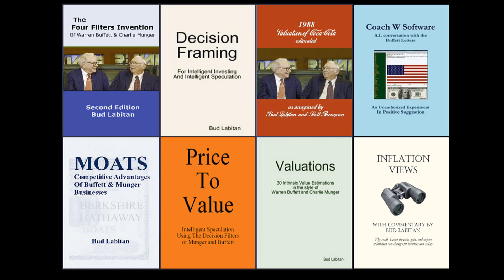Price to Value is about intelligent speculation — decision framing and using the decision filters of Charlie Munger and Warren Buffett. Readers benefit if it stimulates better thinking into the most important factors crucial to decision-making. These decision-framing ideas can be applied across different asset classes. The book first presents the four investing decision filters in simplified terms, then extends these ideas by looking into the intelligent speculation ideal described by Benjamin Graham in his 10th lecture of 1946.